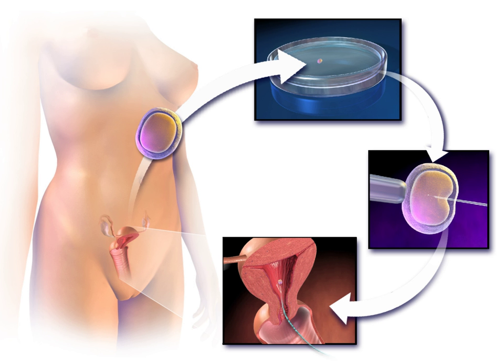According to the CDC, ART does not include treatments in which only sperm are handled, i.e., intrauterine or artificial insemination, or procedures in which a woman takes medicine only to stimulate egg production without the intention of having eggs retrieved. In Europe, ART also excludes artificial insemination and includes only procedures where oocytes are handled. The WHO also defines ART this way.